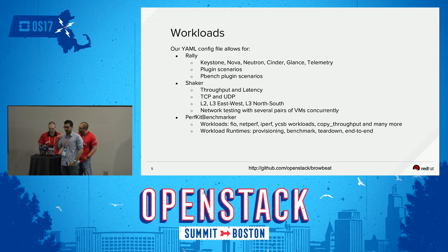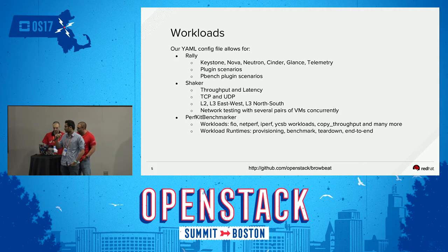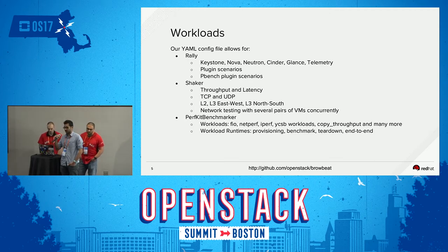We have Rally — it does most of our API performance testing like boot instances, create a bunch of networks, routers, and such. For the data plane, we have Shaker — we can do throughput, latency, request response, TCP, UDP, and all kinds of topologies. Shaker spawns all of that for you, and Browbeat is the one orchestrating it.